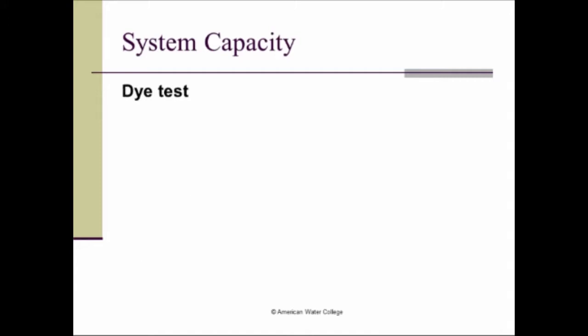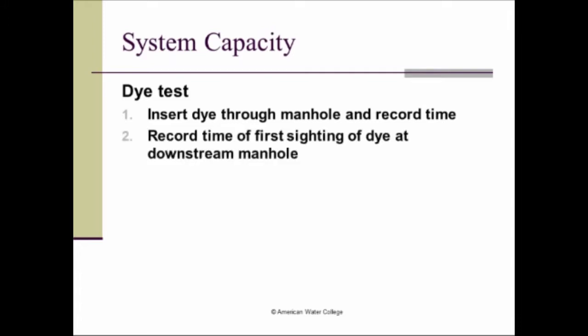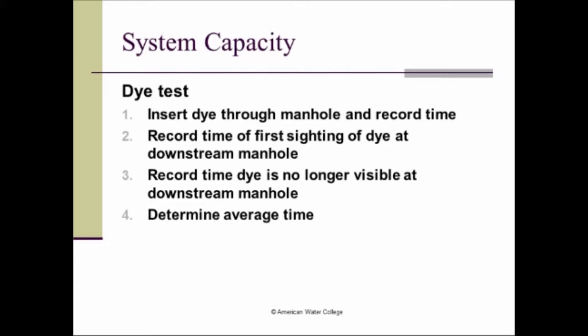Other open channel methods are a dye test and a float test. Well, to do the dye test, it's a real simple procedure. Basically, you take your dye and you insert it through the manhole. And once you drop the dye in, you want to record the time. And then you'll have a second person stationed at the downstream manhole. And at the first sighting of the dye, he'll record that time. And he'll continue watching until the dye is no longer visible. And then he'll record that time as well. So once you drop the dye in at the upstream manhole, the person at the downstream manhole will record the time that he first sees the dye and the time that he doesn't see it anymore. And you'll take the average of those two times. And that will be your average time.